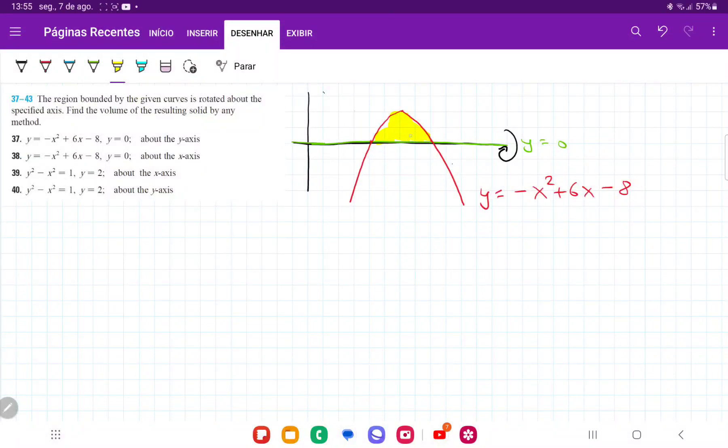So for number 38, we're taking the same equation as problem number 37, but now we're revolving about the x-axis. As we saw previously, the points here go from x equals 2 all the way out to x equals 4.